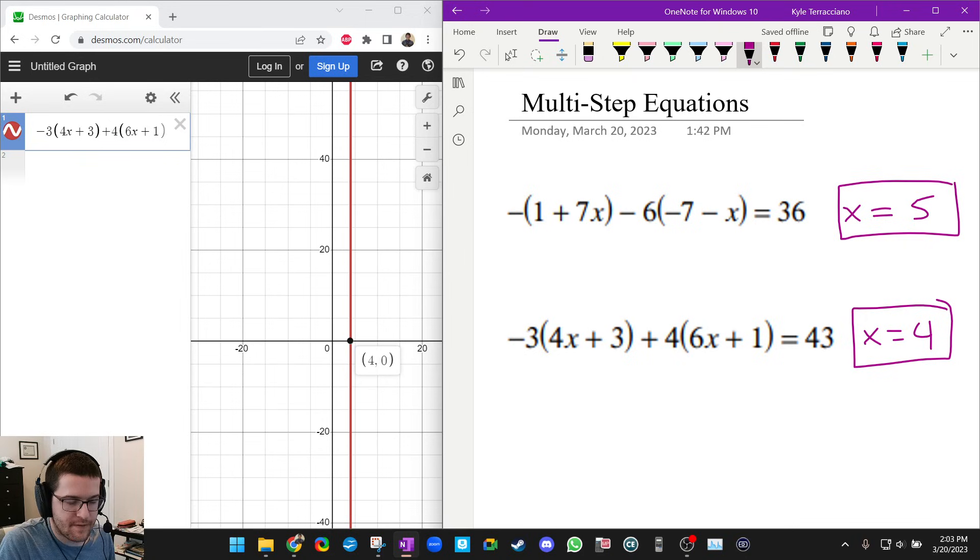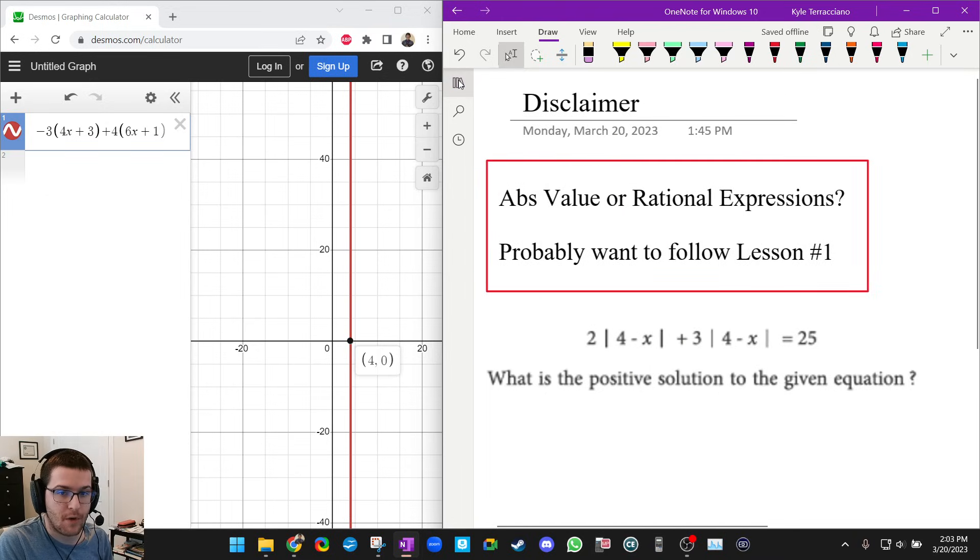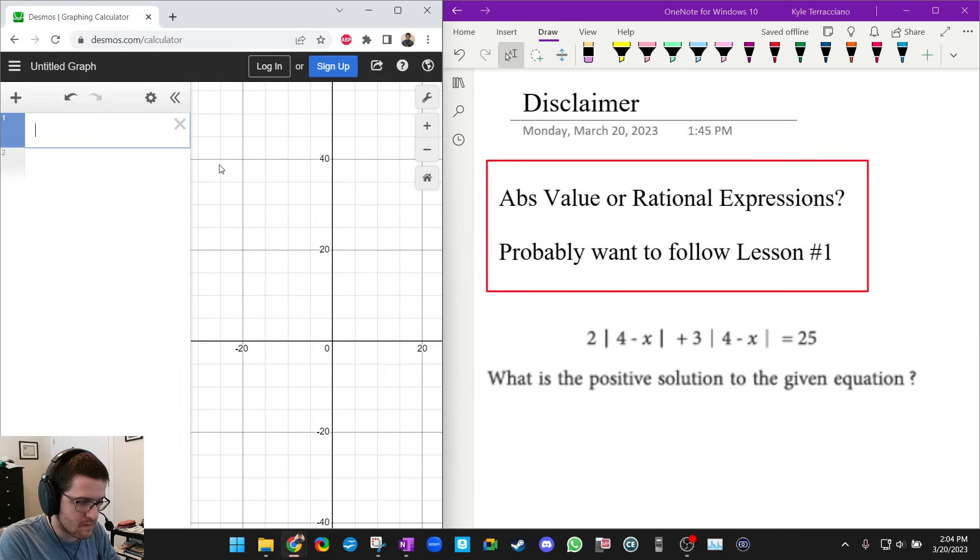So why would I have two videos on this? Well, there's some situations where this strategy just does not work. Okay. So if you see absolute values or lots of rational expressions, Desmos isn't going to give you the answer. It might if it falls nicely on a grid marker, but it's not going to give you the answer. So watch, let me show you.